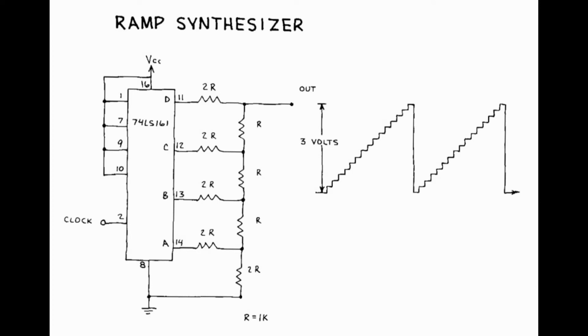The RAMP synthesizer circuit is shown here, which is based on the 74161 4-bit binary counter. The output of the counter is connected to this resistive network, and the voltage across the output here gives us this RAMP waveform.